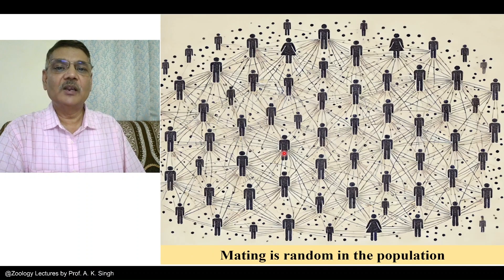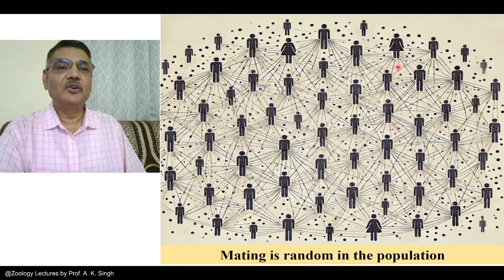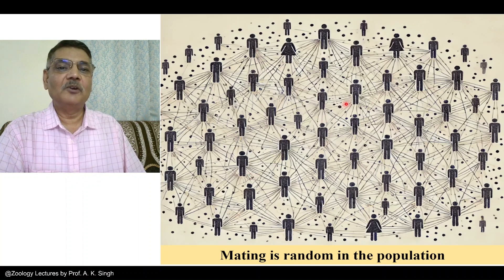In this diagram also, you can see that there are males and females of human individuals of a particular area. Through these lines, random mating is shown. That is, a male of a particular type has no discrimination for mating — this individual may mate with any female of this population. The same thing happens with females also, making this a randomly mating population.